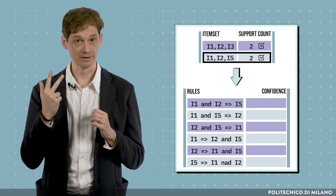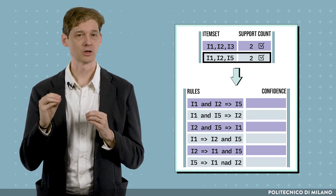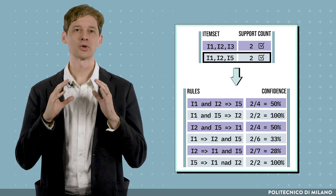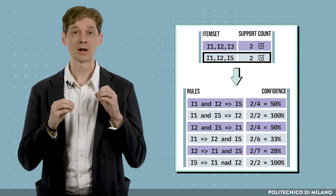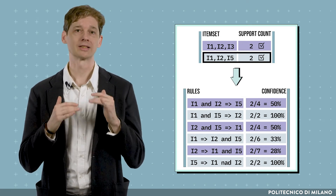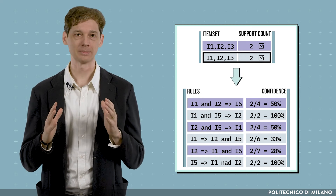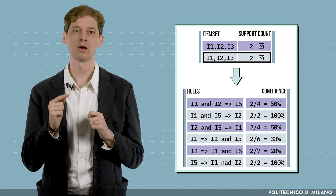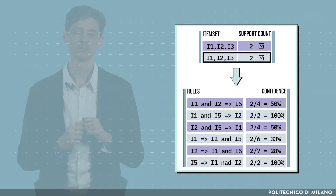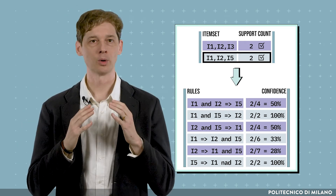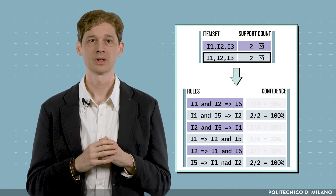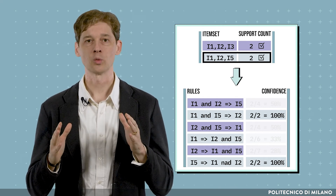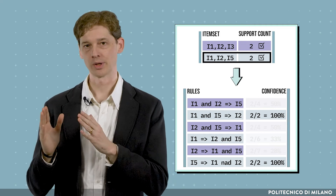For instance, looking at the item set {i1, i2, i5} and checking in the transaction table, we see all the possible rules that can be generated with the related confidence values, which are obtained as the ratio between the support count of all 3 items and the support count of the items in the antecedent of the rule. Only the rules with more than 60% confidence are returned. To complete the procedure, we do the same check for item set {i1, i2, i3}.